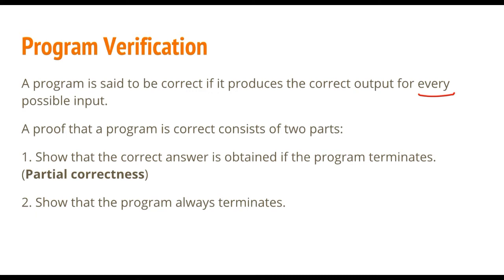A proof that a program is correct consists of two parts. First, you have to show that the correct answer is obtained if the program terminates — that is partial correctness. Second, you have to show that the program always terminates.